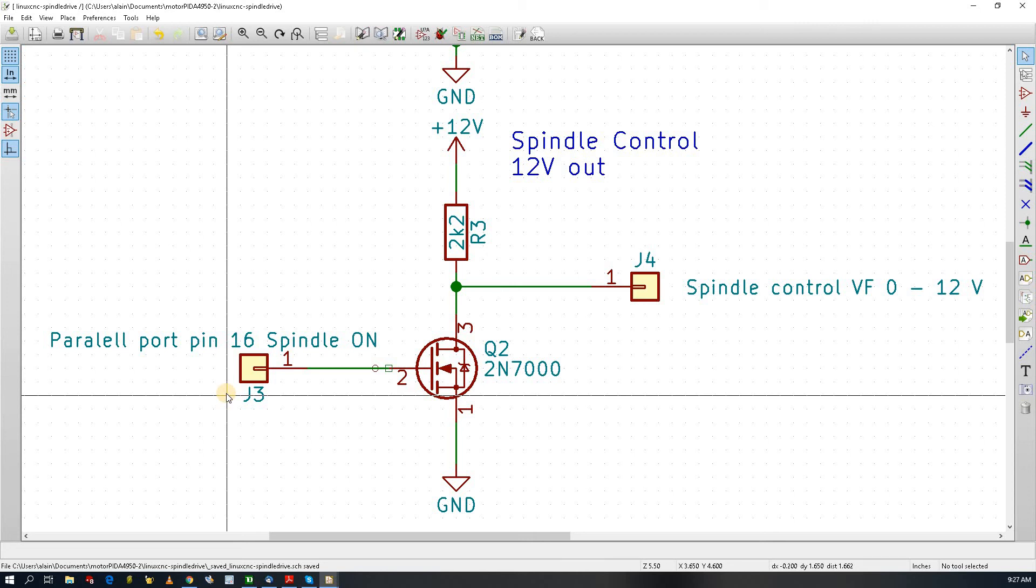Or you can change your spindle control to react to your own parallel port level. Anyway, usually spindle controls are smart enough so you can make this logic active high or active low.